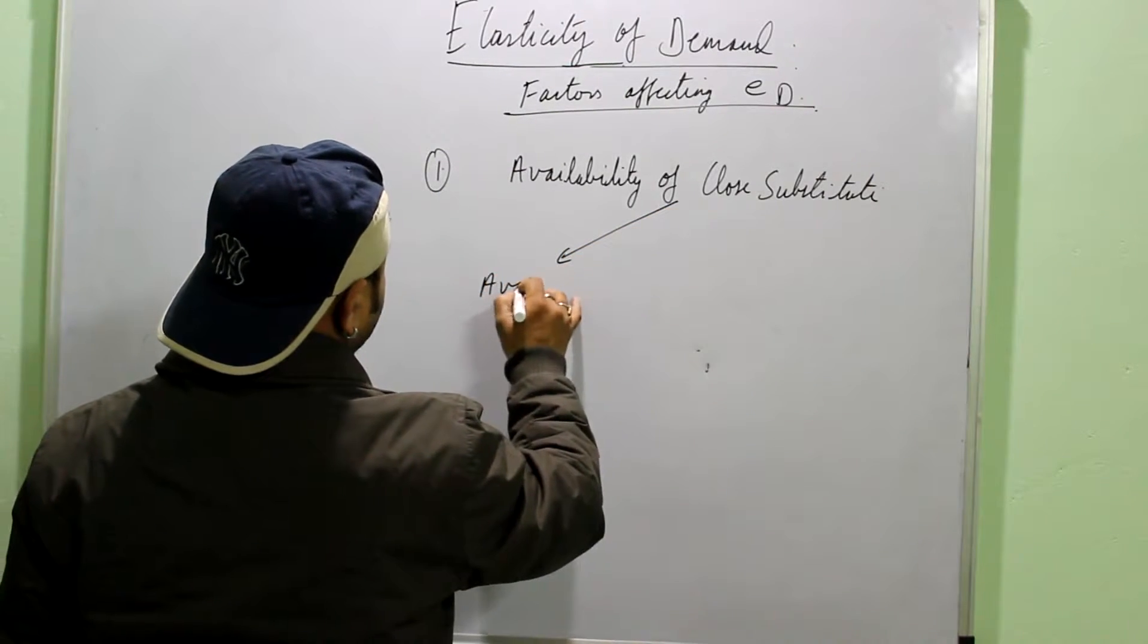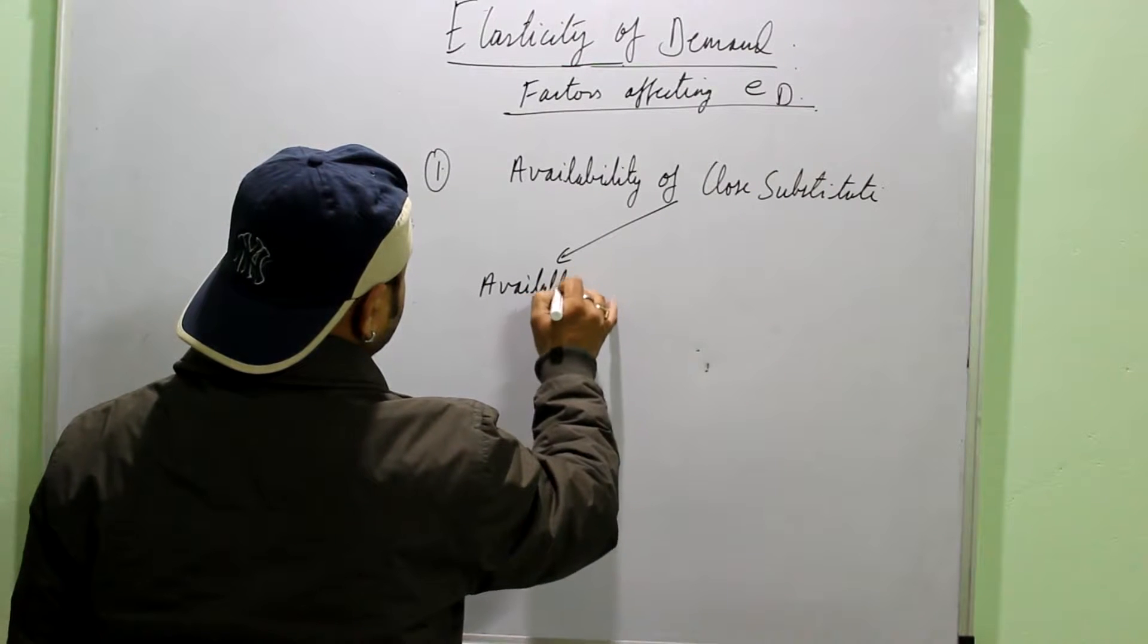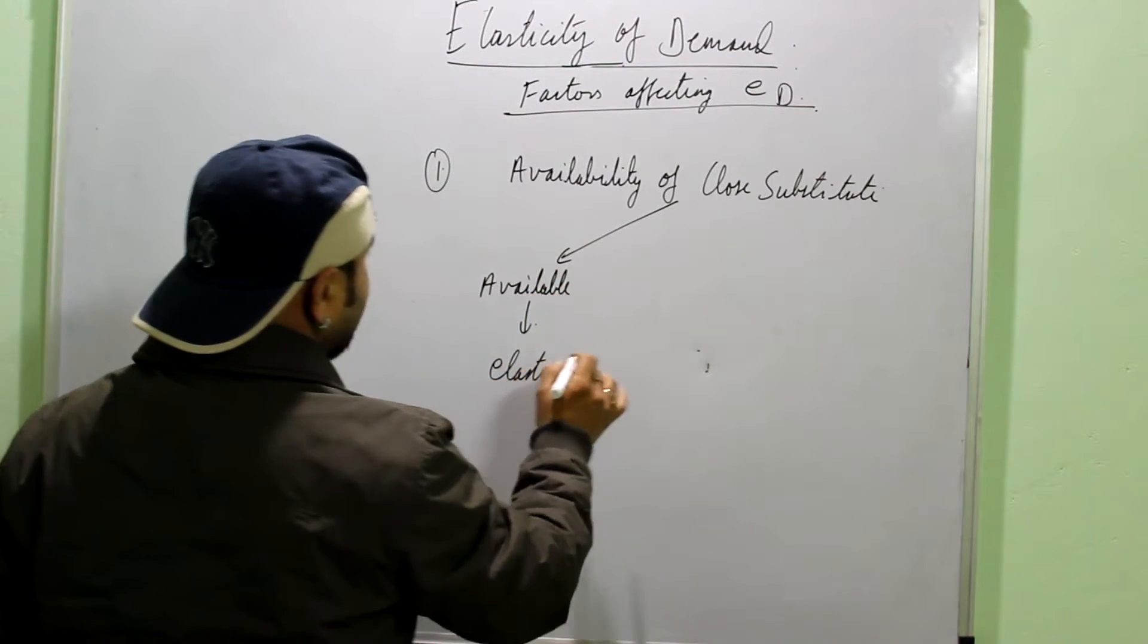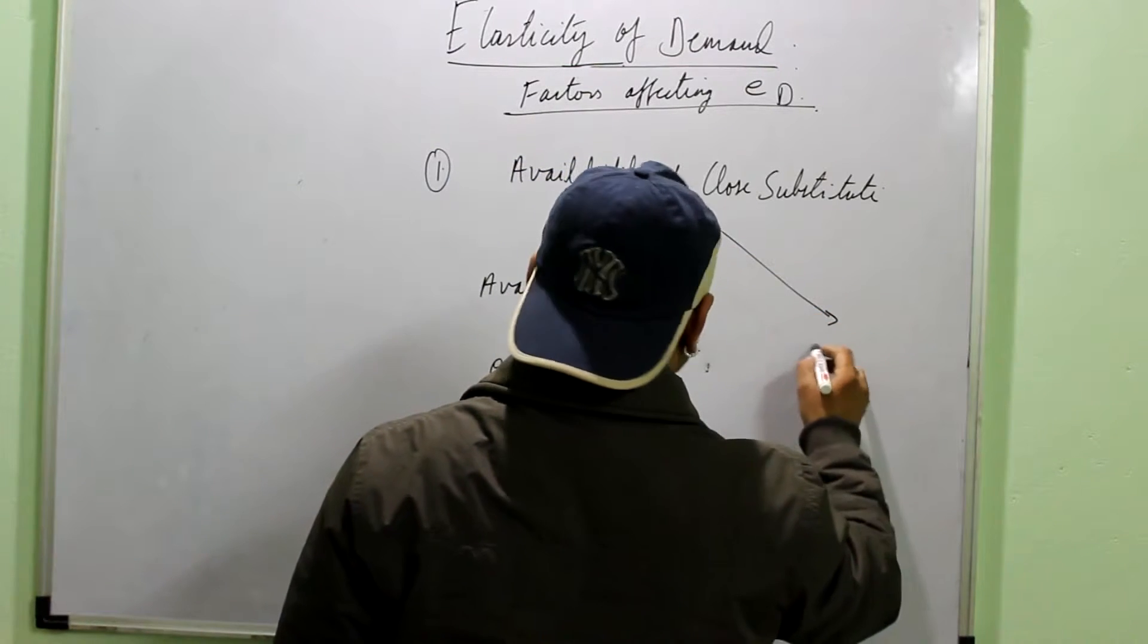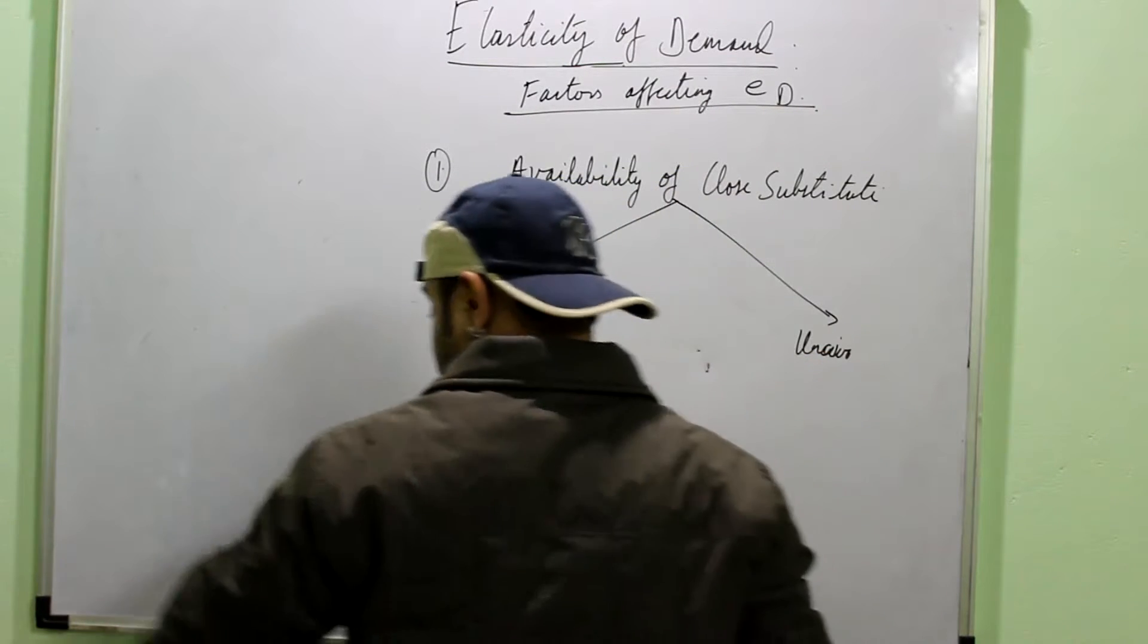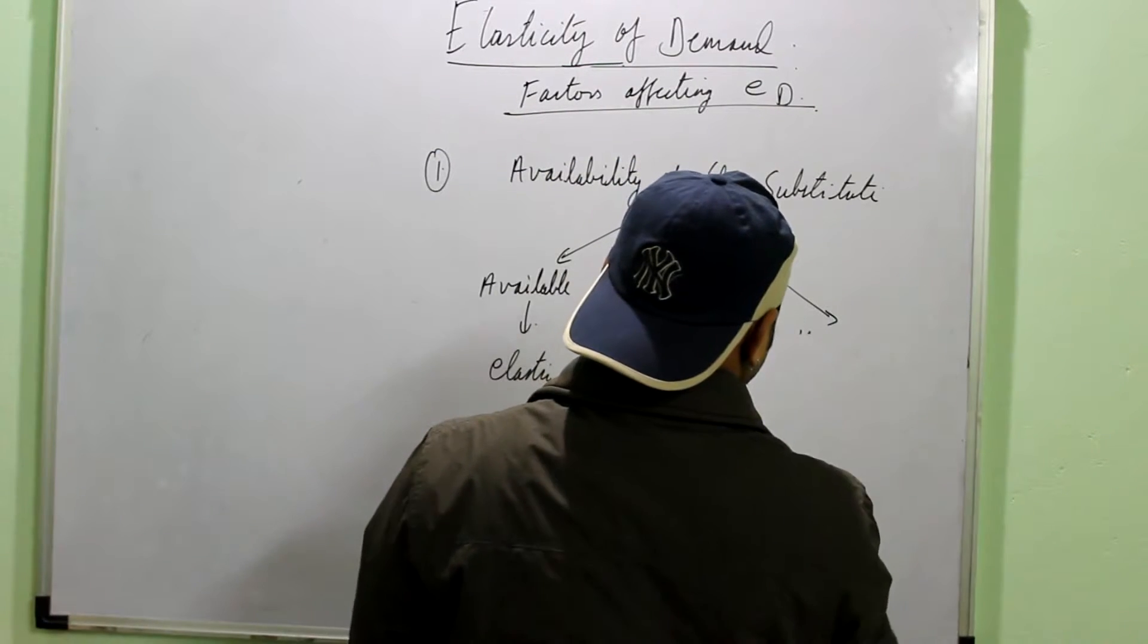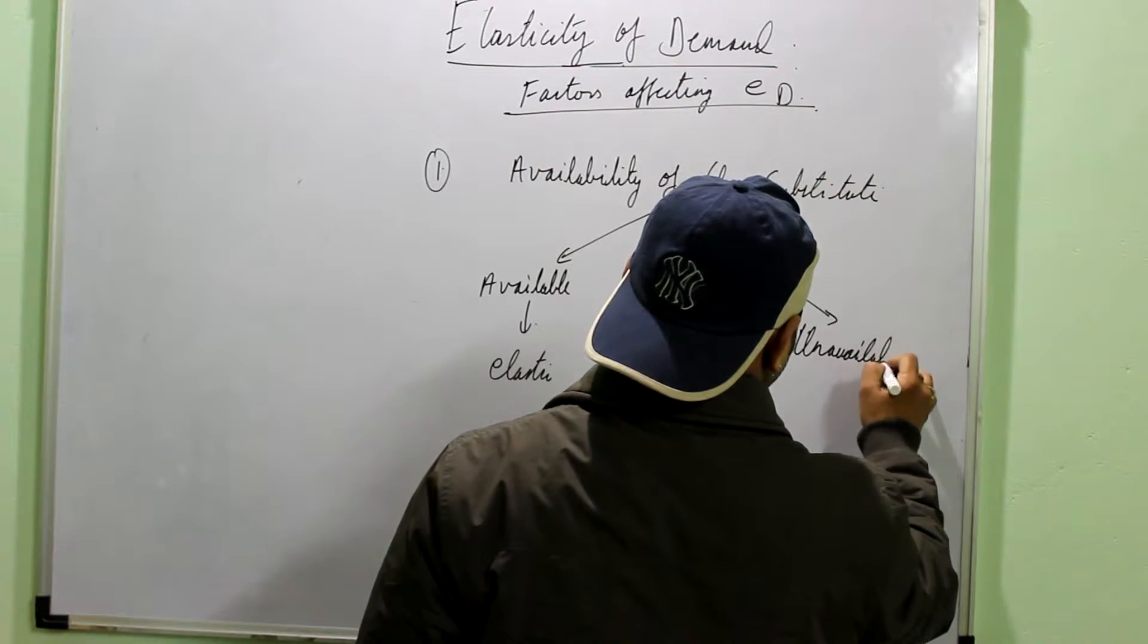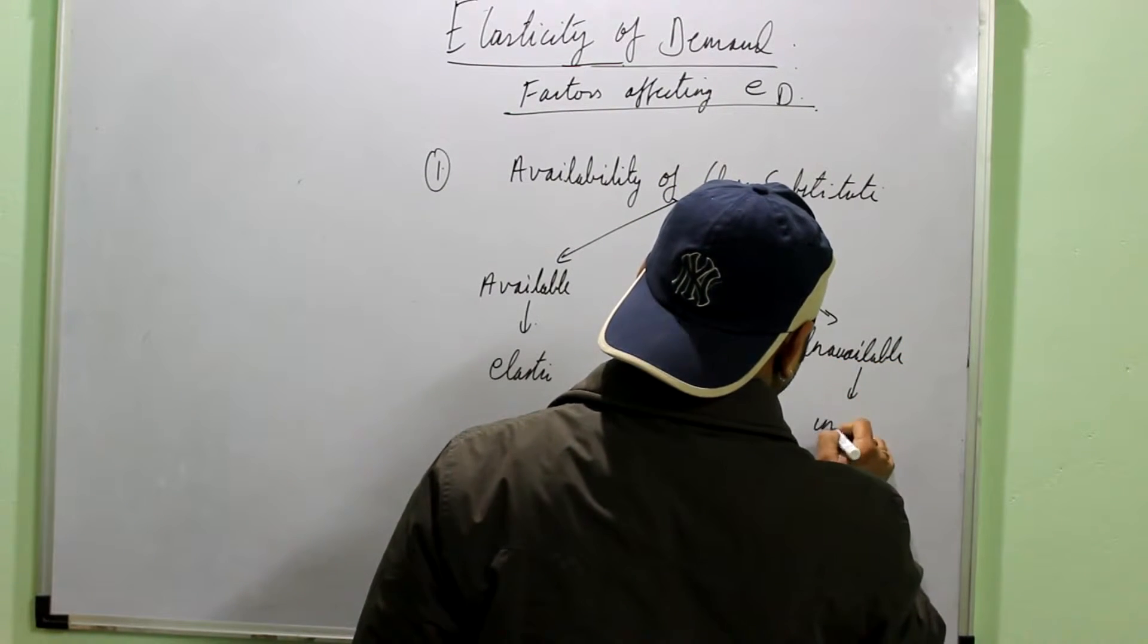Suppose the substitute of the commodity is available. Then the demand is elastic or it is elastic. If the substitute is unavailable, then the demand is inelastic.